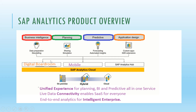The most important aspects are business intelligence, planning, predictive, and application design. Business intelligence covers reporting and storytelling by creating stories. Planning covers simulation of different charts. Predictive covers forecasting and automated insights. Application design is for custom applications based on SDK extensions. SAP Analytics Cloud is a cloud-based tool that can be deployed on-premise, hybrid, or in the cloud.